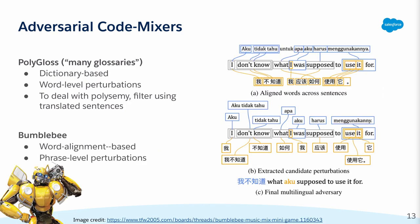Our second attack, Bumblebee, addresses the sense disambiguation problem differently by generating candidate perturbations directly from the translated sentences. This is done by first aligning the words and phrases between the original sentence and its translations before extracting the aligned pairs as candidate perturbations. The advantage of this approach is that it results in a larger set of candidates compared to a non-exhaustive dictionary as in Polygloss. Additionally, the word alignment approach also uses phrase-level perturbations which resemble real code mixing more than the word-level ones, making the code-mixed adversaries more natural.